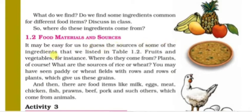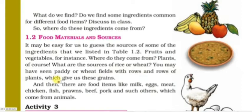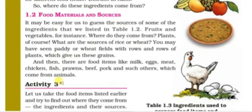It may be easy for us to guess the sources of some of the ingredients listed in Table 1.2 and Table 1.3. Rice and wheat come from paddy and wheat fields — rows and rows of plants give us these grains. There are also food items like milk, egg, meat, chicken, fish, prawns, beef, and pork which come from animals.